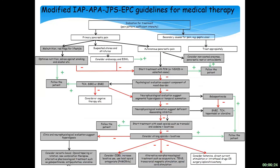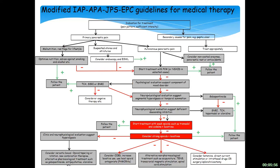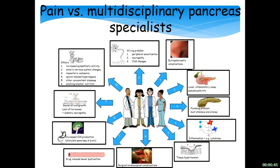Other possibilities include ketamine and direct current stimulation, though these are not well documented. You should also be aware that many patients, when they arrive, have both psychological problems, autonomic pancreatic pain, and malnutrition altogether. So you cannot just follow the algorithm — you have to step in and out of it. Many patients, when they come to us, are already on strong opiates, which makes it difficult to start from scratch. But if you can have them from scratch, try to follow the algorithmic approach.